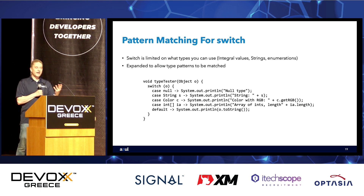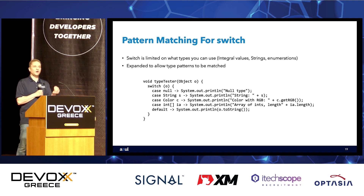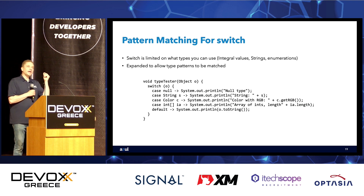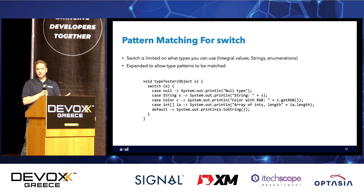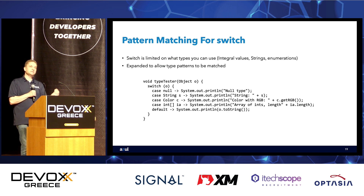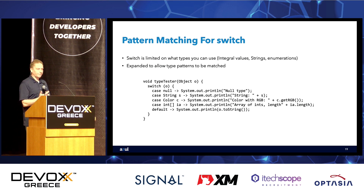Primitives are not types in Java, so you can't have `case int` on its own, but an array of primitives is a type, so you can have `case int[]` and then print out its length. You could also have a `default` case to handle anything else.